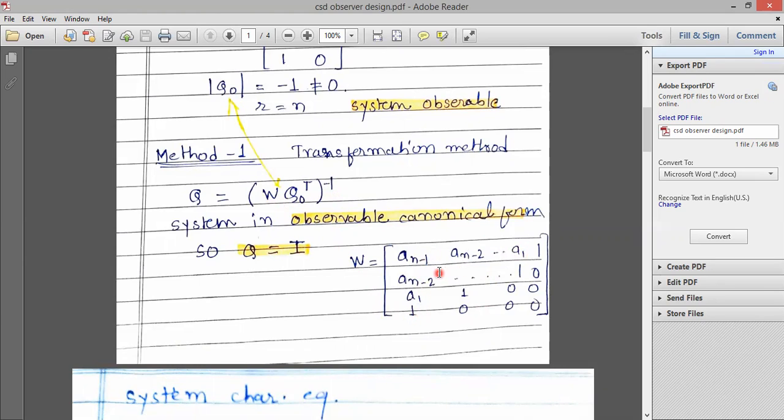If the given system is observable canonical form, then Q is equal to I. Now, calculate the system characteristic equation, that is SI minus A.